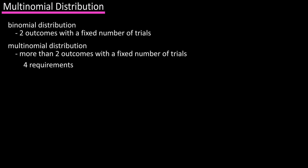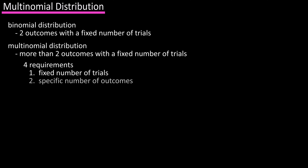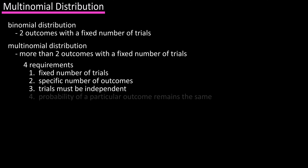There are four requirements for a multinomial experiment. Number one is that there must be a fixed number of trials. Number two is that each trial has a specific number of outcomes. Number three is that each trial must be independent of one another. And number four is that the probability of a particular outcome remains the same.